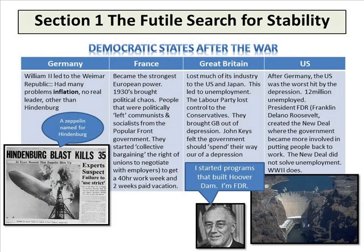Still in Section 1, it's a rather large section covering Germany, France, Great Britain, and the United States. The democratic states after the war: in Germany, Wilhelm II led to the Weimar Republic, which had many problems of inflation and no real leader other than Hindenburg — the Hindenburg Zeppelin is named after him. In France, which became the strongest European power in the 1930s, it brought political chaos.